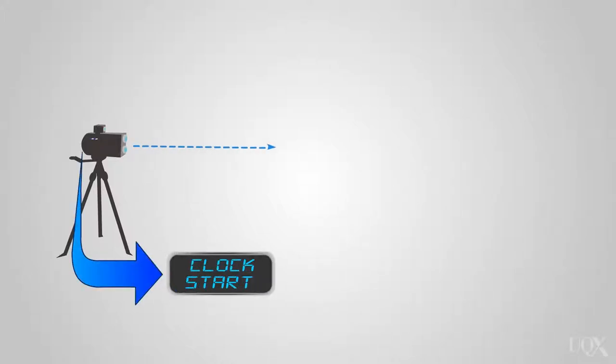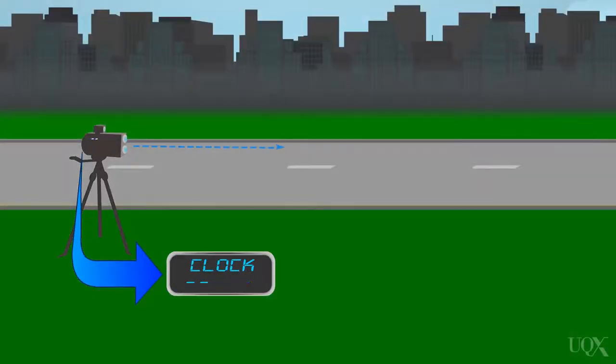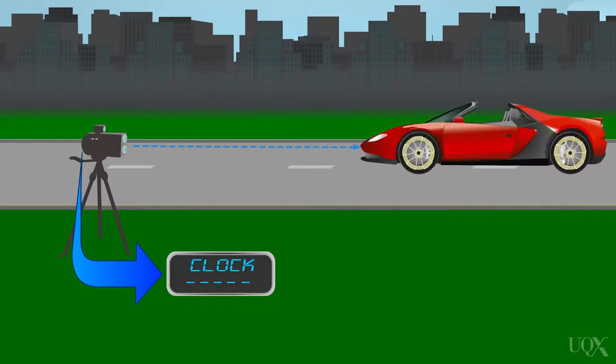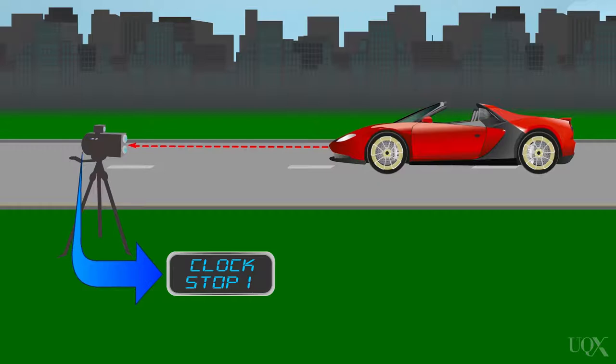A laser sends out a short pulse of light and simultaneously starts a clock. The pulse is aimed at a reflective part of the vehicle, usually the number plate. The reflected pulse, when received by the LIDAR unit, stops the clock, so the time of flight of the pulse can be determined.